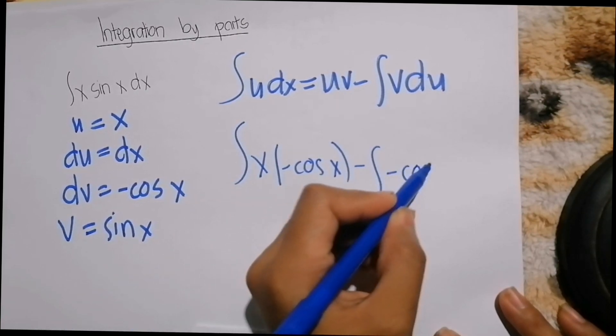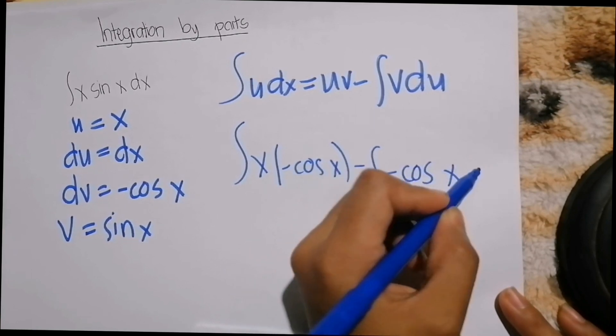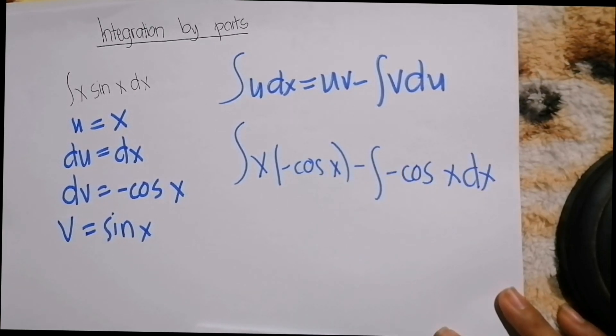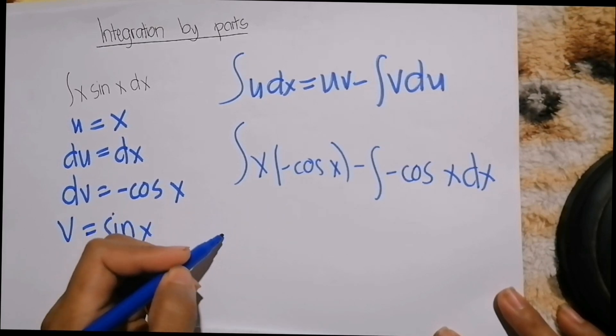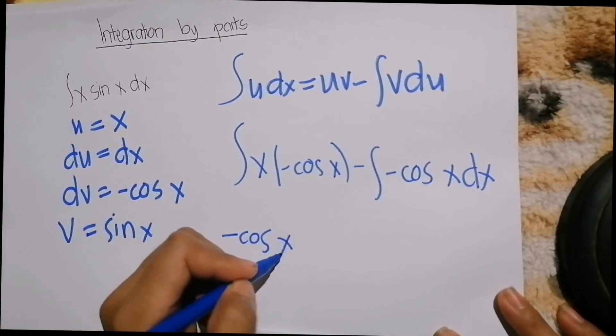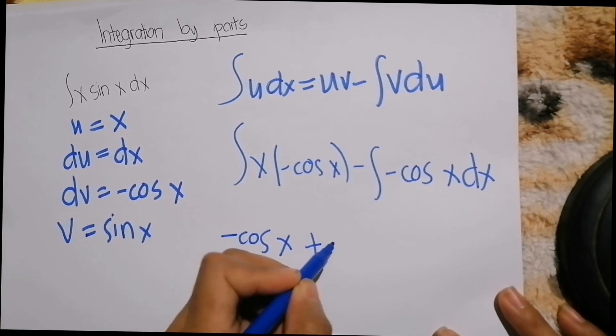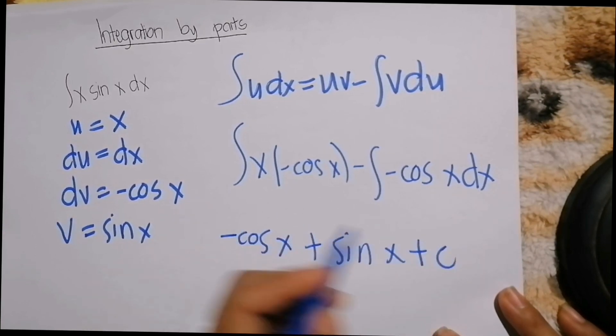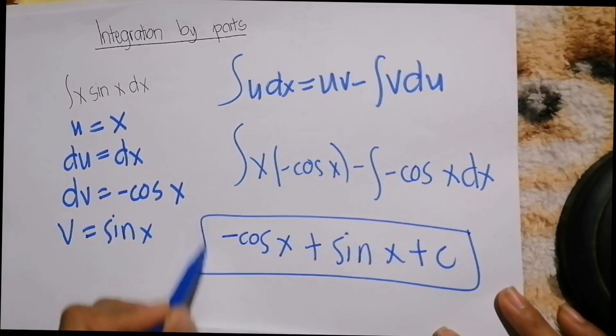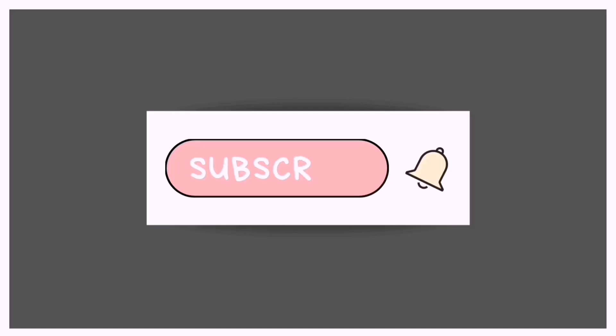minus cosine x dx. Then we got negative cosine x plus sine x plus c.